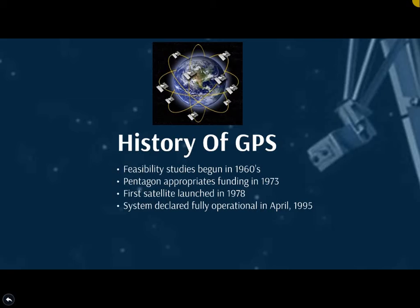After a long period of work, the system was declared fully operational in 1995, comprising a total of 24 satellites. It was initially developed for use by the United States military, and in about 2000, it was declared for civilian use. The design of GPS is based partly on similar ground-based radio navigation systems such as LORAN or the DECA navigator, developed in the early 20th century.